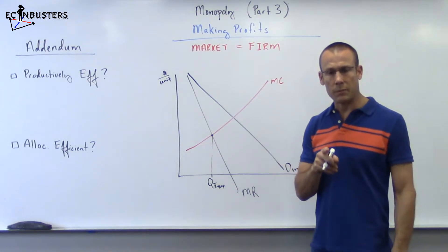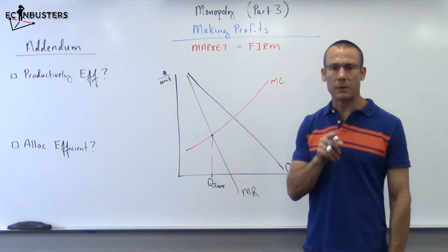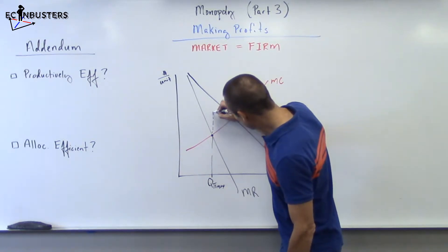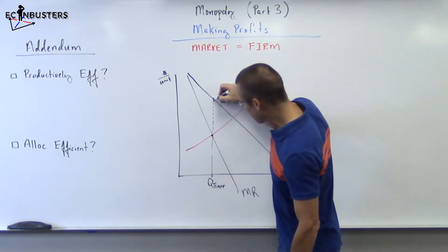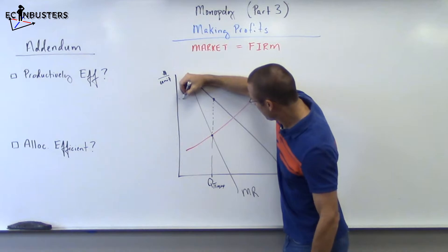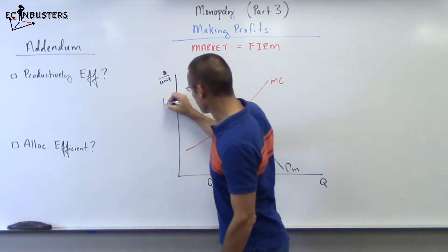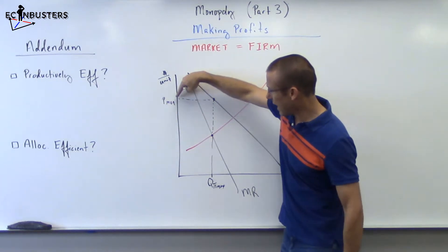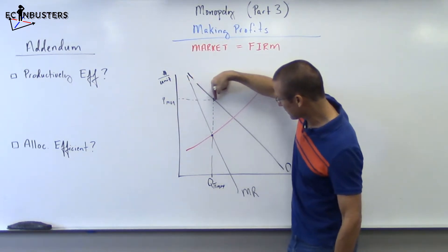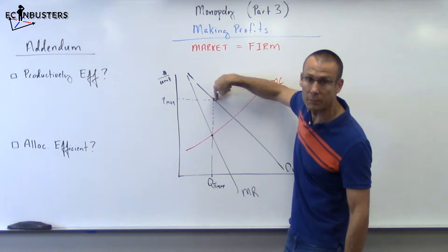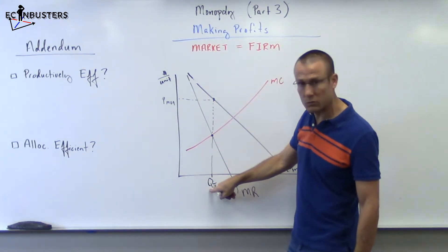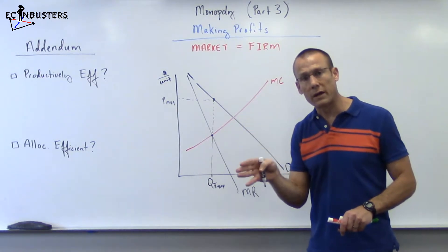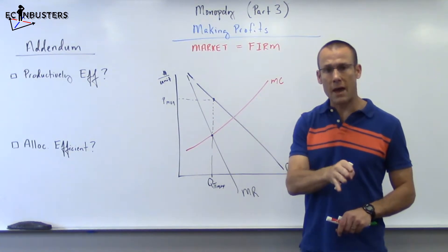Now the price. How do we find the price? Price is based on the demand curve. So the monopolist is going to charge a price based on the demand curve. At this price, this horizontal distance is the quantity demanded. And that equals the quantity supplied — because the quantity supplied is going to be the quantity that gives us profit max.